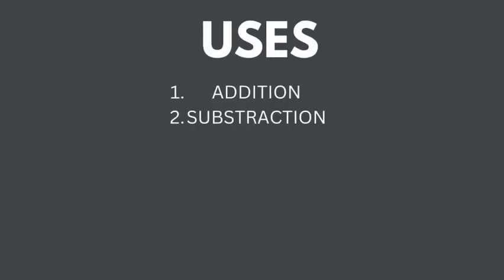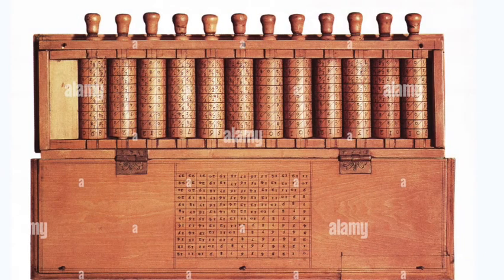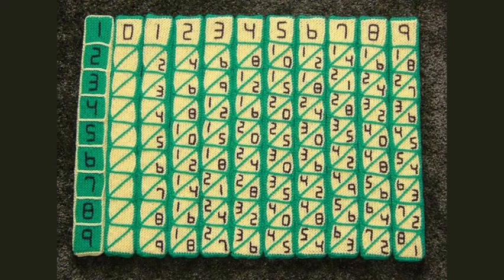Next is the Napier Bones. The Napier Bones was invented in the year 1617 by a man called John Napier. The device involved a collection of movable numbered rods and a board. John Napier made use of bones when he constructed this device, which is why it was called Napier Bones.